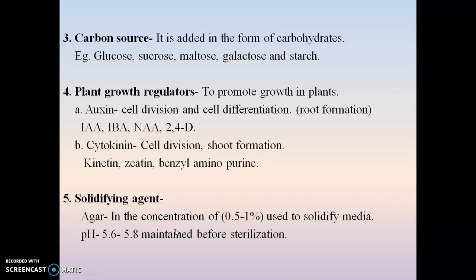Regarding pH, a value between 5.6 and 5.8 is maintained, which is the best pH for plant growth in tissue culture. If pH is above 6, the medium will become hard, and if pH falls below 5, it does not allow gelling of the medium. Therefore pH should be maintained between 5.6 and 5.8, and all these conditions should be maintained before sterilization. Aeration of the tissue culture is also important — the culture media is periodically mixed by a stirrer or programmed shaker to maintain the best possible aeration.